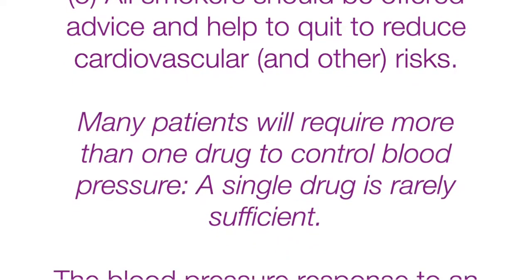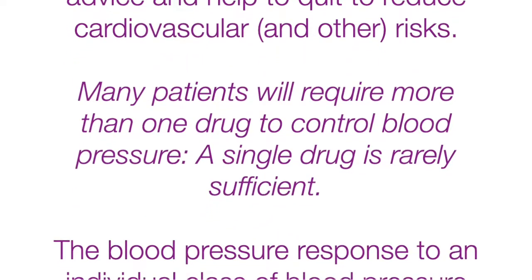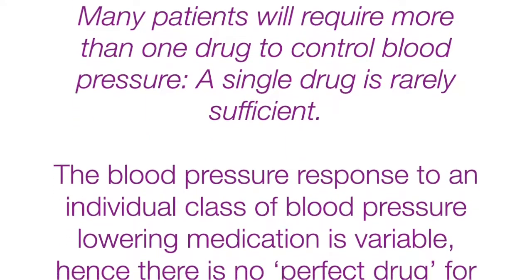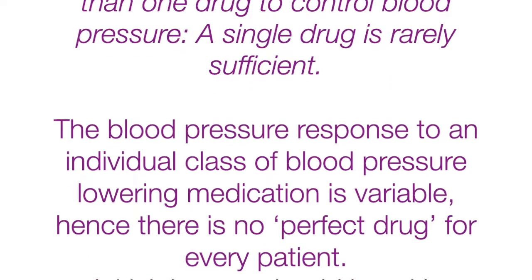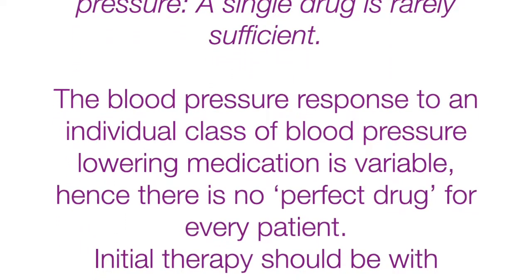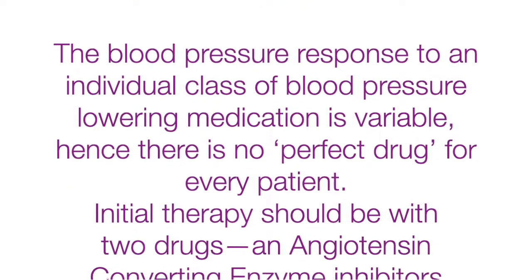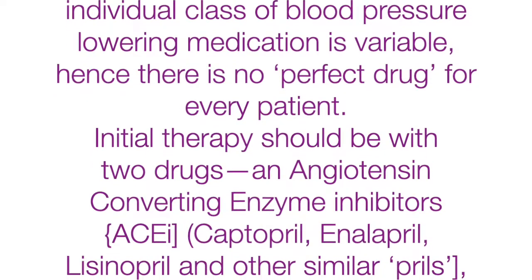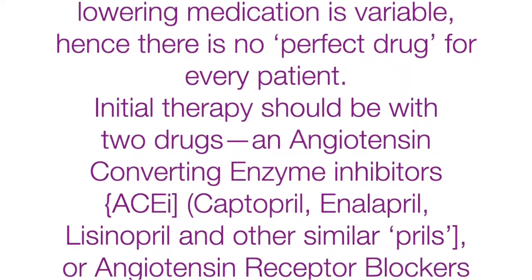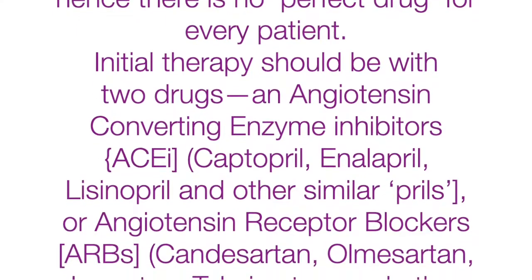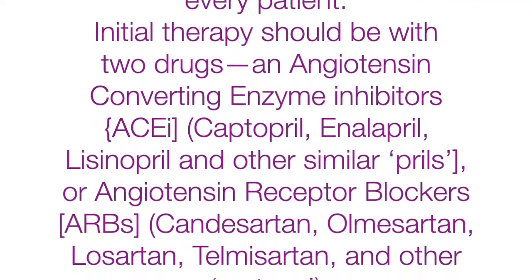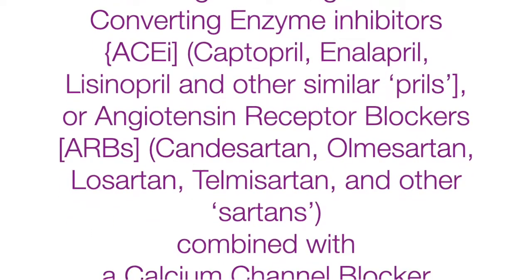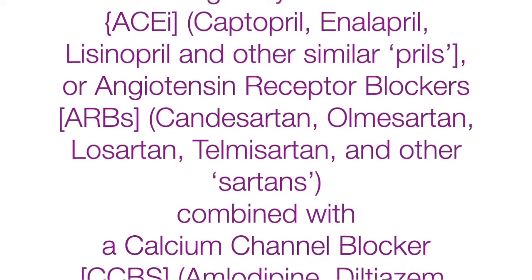Many patients will require more than one drug to control blood pressure; a single drug is rarely sufficient. The blood pressure response to an individual class of medication is variable, so there is no perfect drug for every patient. Initial therapy should be with 2 drugs: an angiotensin-converting enzyme (ACE) inhibitor such as captopril, enalapril, lisinopril, and others.